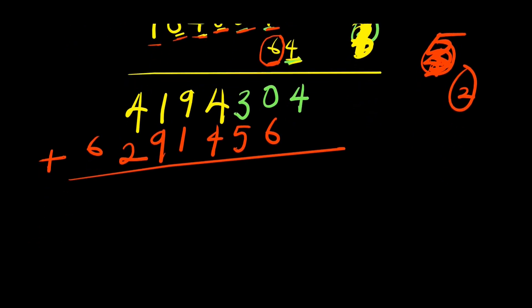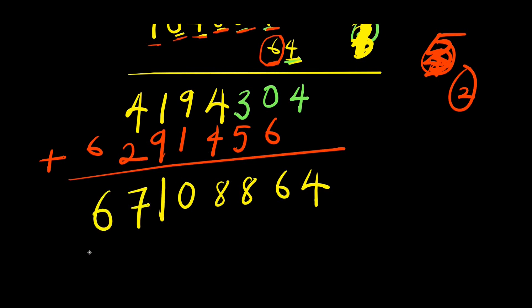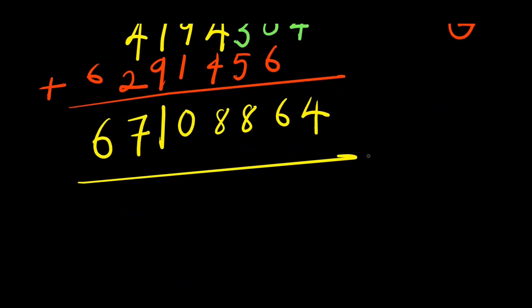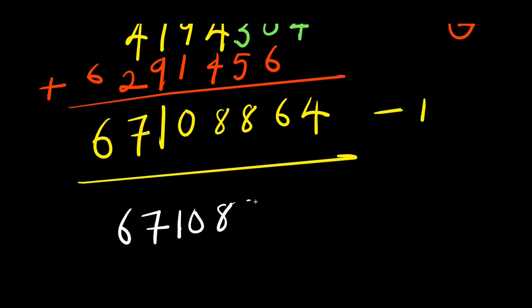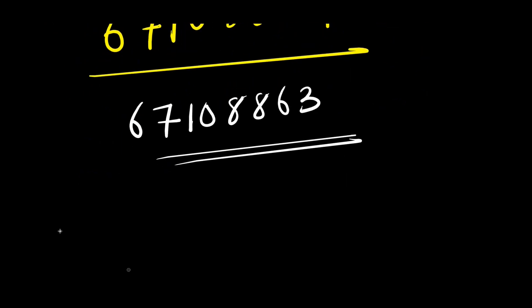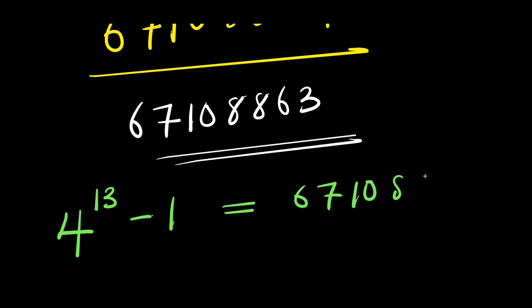Adding up the partial products: we get 67,108,864, then subtract 1 from it. So our answer is 67,108,863.